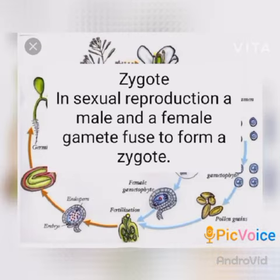Zygote: A zygote is formed by the fusion of the male and female gametes during sexual reproduction.